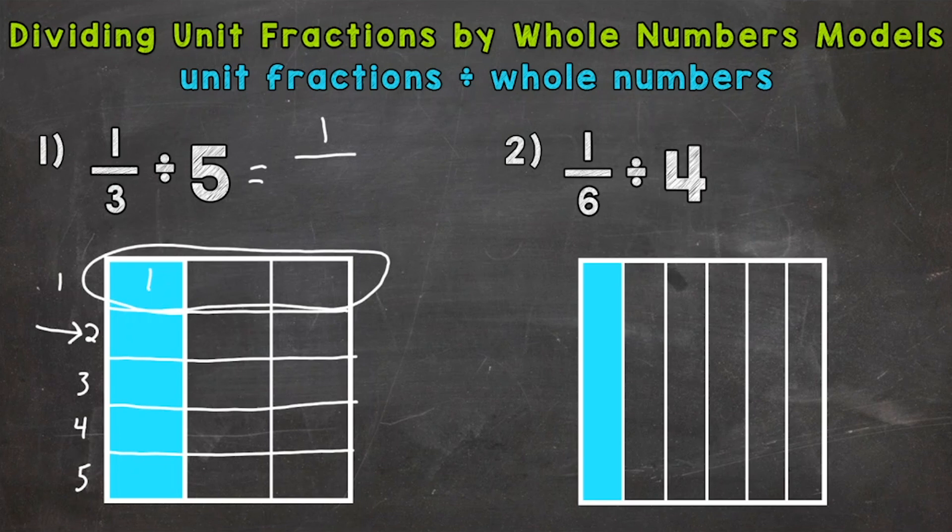Now our denominator, this is a common mistake here, is not going to be 1, 2, 3 pieces, 3 total pieces within that top group. That just gives us 1/3, which was our original fraction.